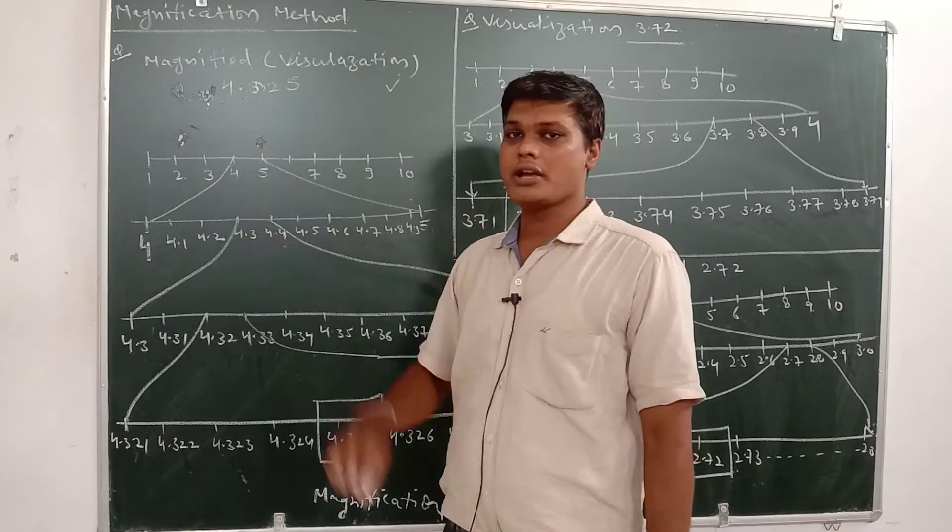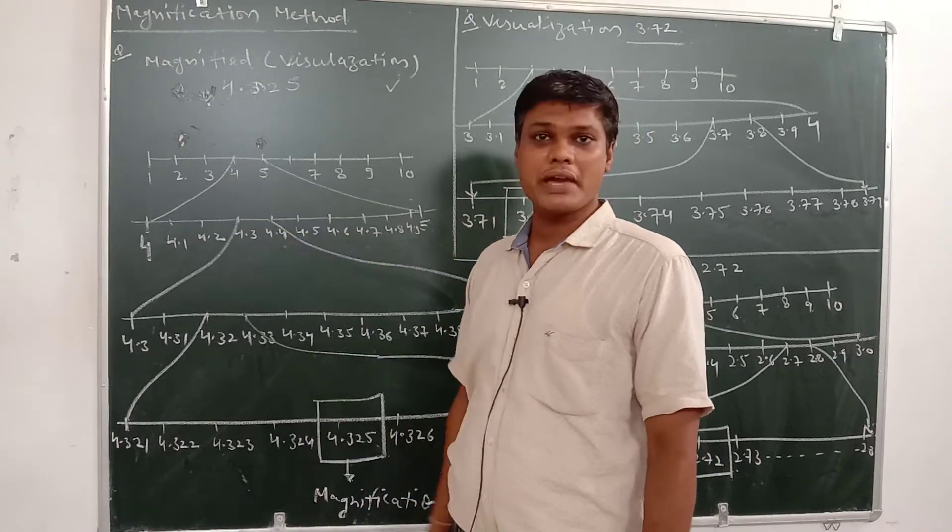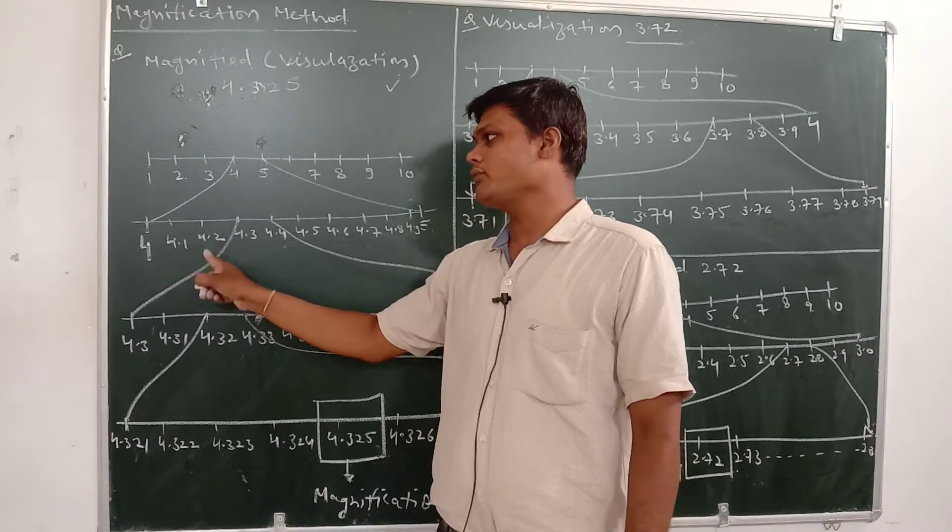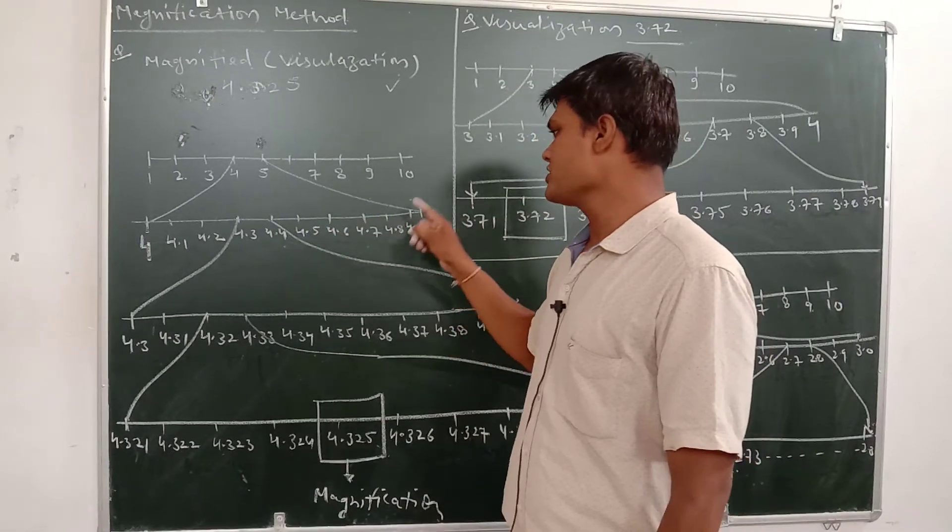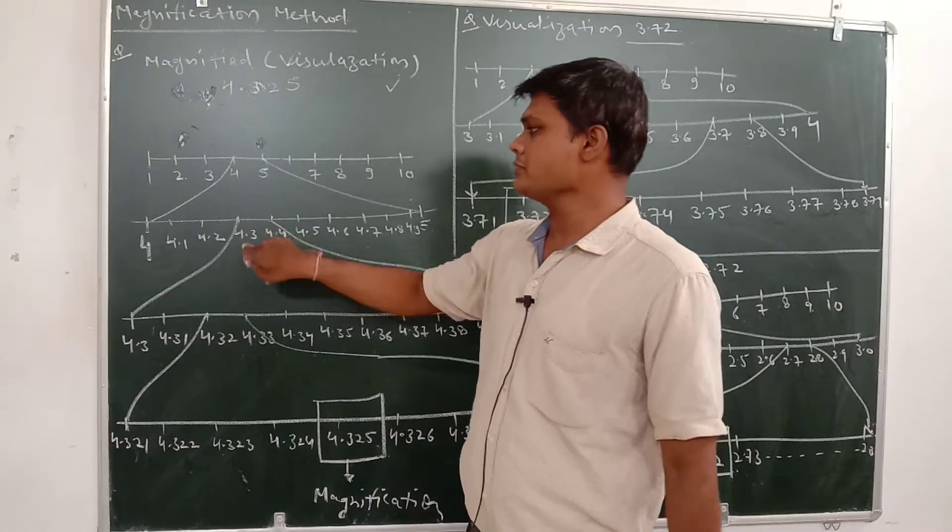Now we need 4.3, so that means it will come between 4 and 5. So 4 is here, the last digit will be 5: 4.1, 4.2, 4.3, 4.4, 4.5, 4.6, 4.7, 4.8, 4.9, and 5. Now you have found 4.3.